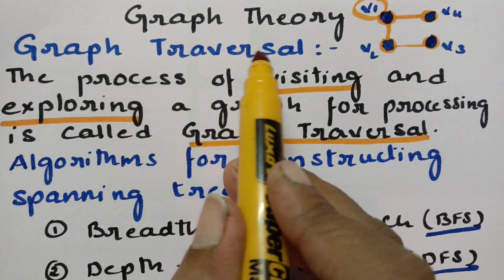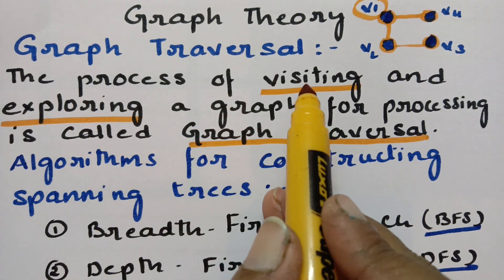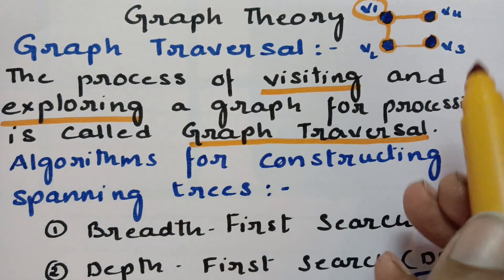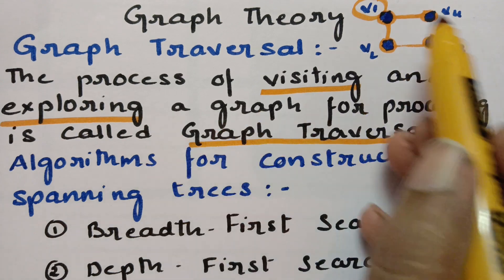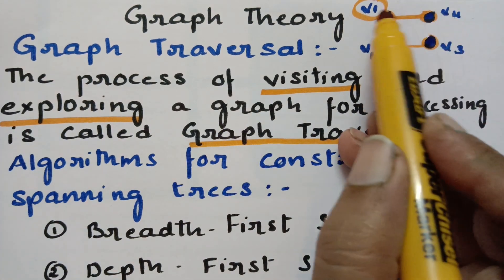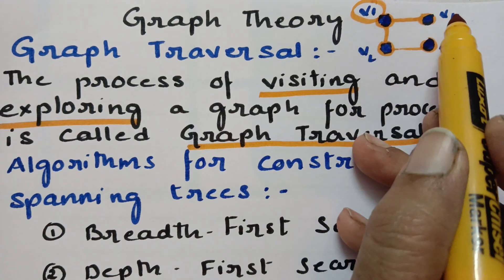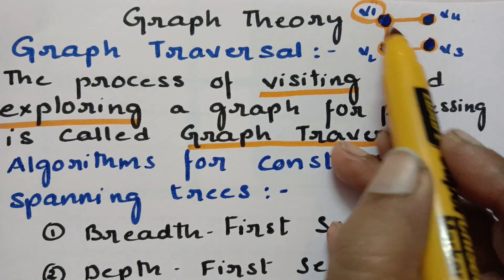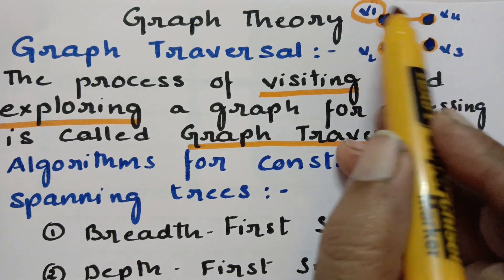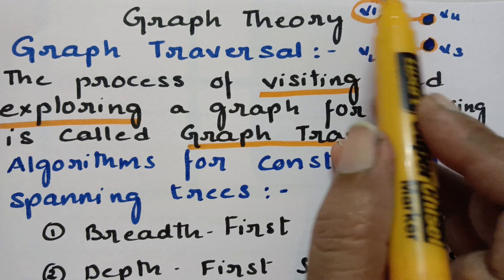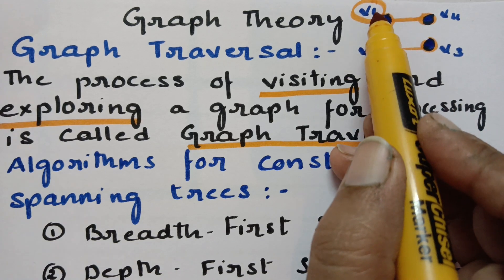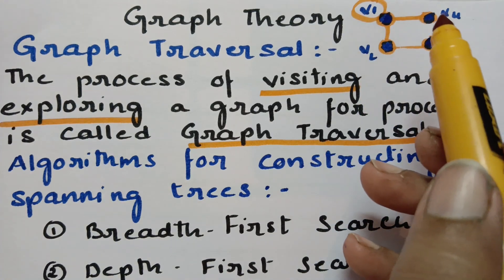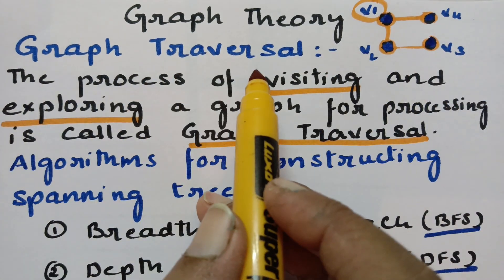So graph traversal is nothing but the process of visiting. First I have visited vertex V1, and next is exploring. So V1 is connected to V4 and V2 — there are two adjacent edges. So the neighboring surroundings, in and around the visited vertex, is nothing but exploring. First we have to visit and we have to explore, and this is graph traversal.